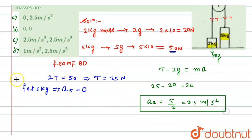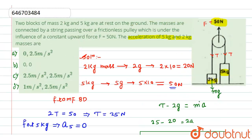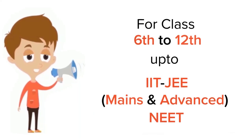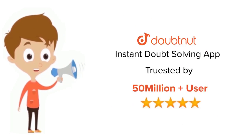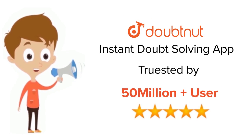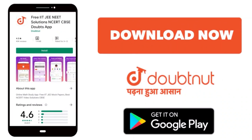So the acceleration for the 5kg mass is zero and for the 2kg mass it is 2.5 meter per second square. Option A is the correct answer. For class 6 to 12, IIT JEE and NEET level, trusted by more than 5 crore students — download the Doubtnut app today.